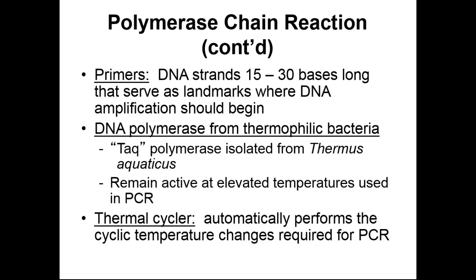Then we need the enzyme that actually does the copying — DNA polymerase from a thermophilic bacteria. Thermus aquaticus is the bacterium of choice. Its DNA polymerase is referred to as Taq polymerase. Taq polymerase is an enzyme isolated from an archaea, specifically Thermus aquaticus — an archaeal species that can live at very high temperatures, hence its name thermus. It lives in boiling water springs. This DNA polymerase is special because it does not become denatured at very high temperatures; it remains active in its native state.